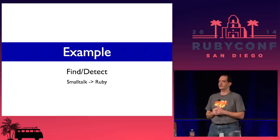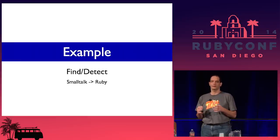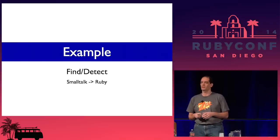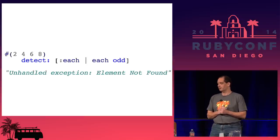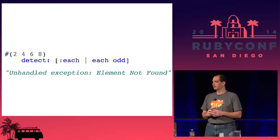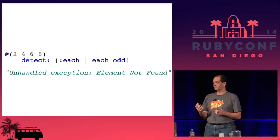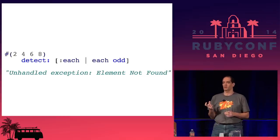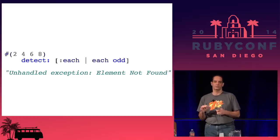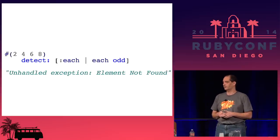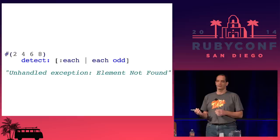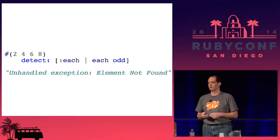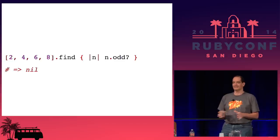Here's another example. What if we want to find something in a collection? Detect is the other name for it — Smalltalk uses detect, Ruby has both. In Smalltalk, the hash with the parens is a literal array, and we're looking for an element in that array that's odd. Detect is the message name with the colon on the end, and the square brackets is a block. The colon each is actually the block variable. One difference from Ruby: if there isn't an element that matches the condition, it raises an exception, whereas Ruby would just return nil. Here's the same code in Ruby — I use find here because that tends to be more idiomatic Ruby.